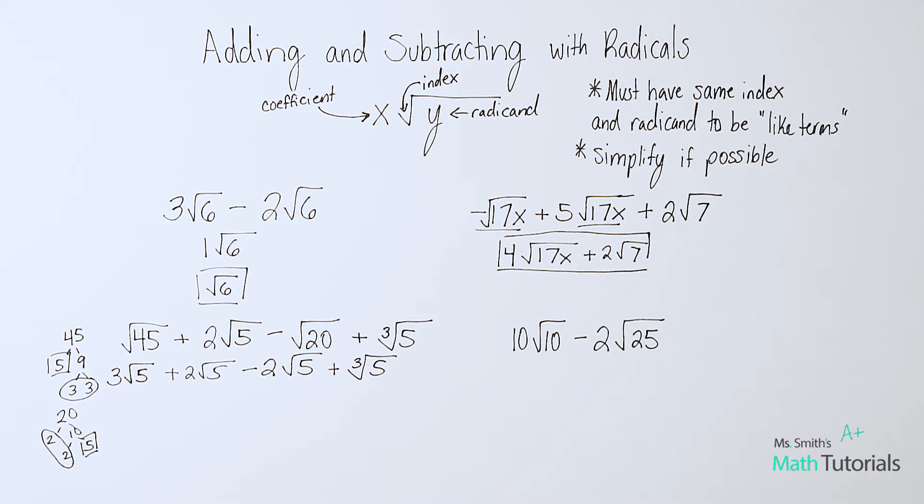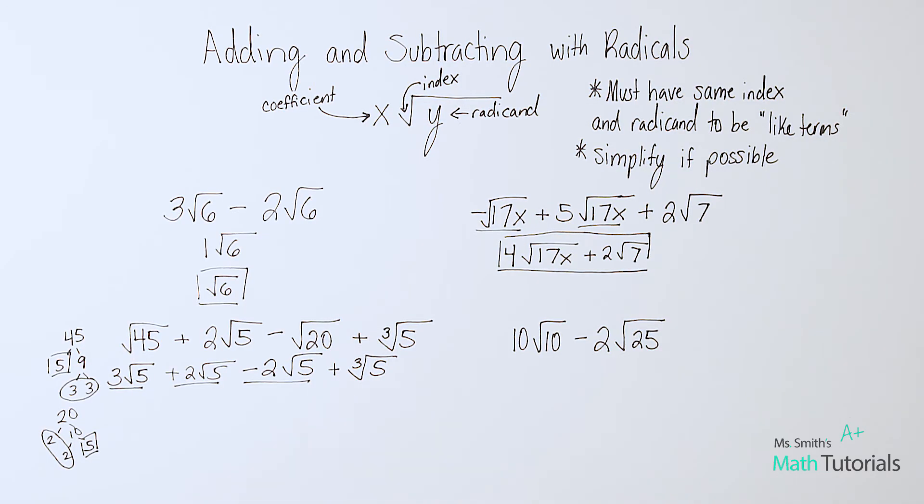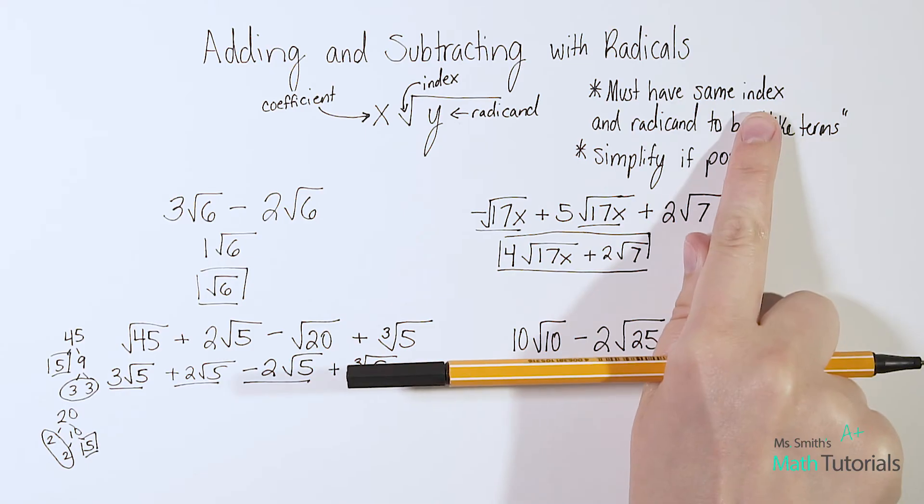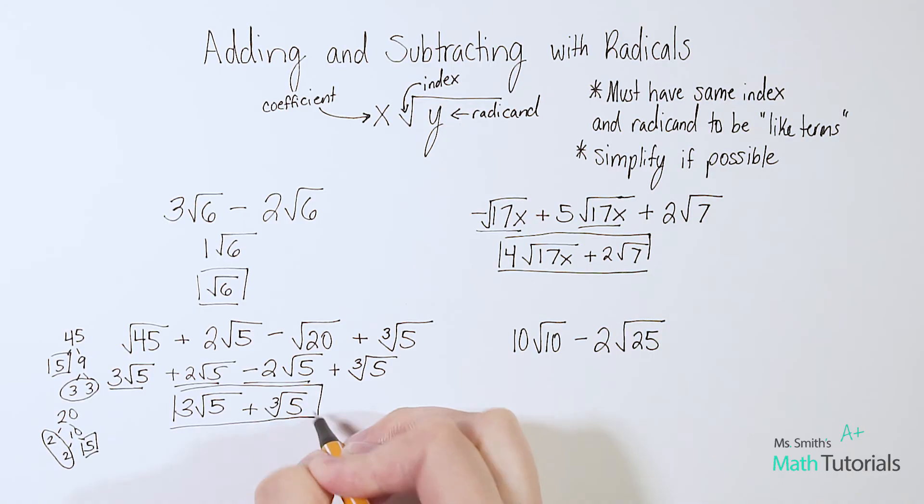So now I've got some like terms here now that I can combine. Notice how when we started at the beginning, we had nothing. Now I've got some stuff that I can work with. So let's combine all the like terms. So this one, this one, and this one are all like terms. Now notice I did not underline ∛5. Now you may be thinking, well, it's a five. It's the same radicand, and it is, but it's not the same index. Remember, it's got to have the same index and radicand. So these indexes are two, understood two. That one's a three. So not a like term. All right. So let's do three plus two minus two. So three plus two is five, and then five minus two is three. And then the radicand and index stay the same. And then we'll bring down this plus ∛5. There's nothing I can do with that. So this is my final answer broken down fully.